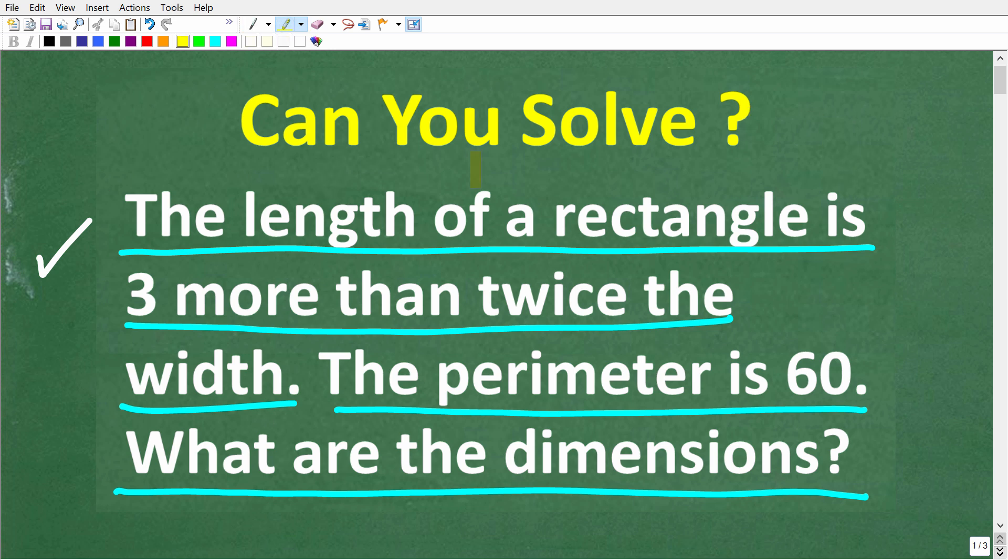Before I show you the answer, let's take one more look at the question. The length of a rectangle is three more than twice its width. The perimeter of this rectangle is 60, or 60 units. So if it's 60 inches, 60 centimeters, it's all the same. The question is, what are the dimensions of the rectangle, i.e. the width and the length?